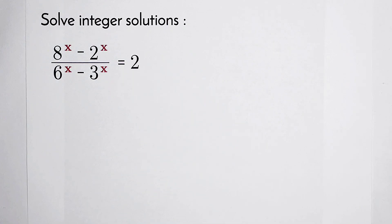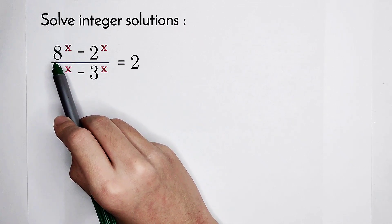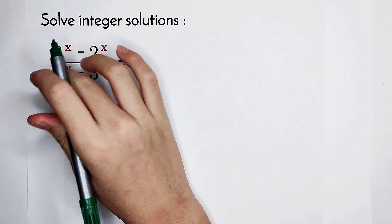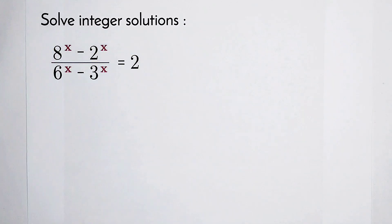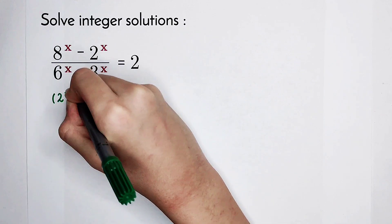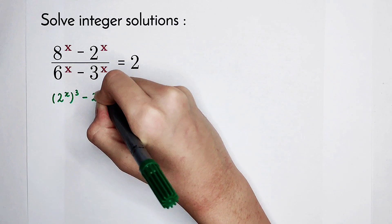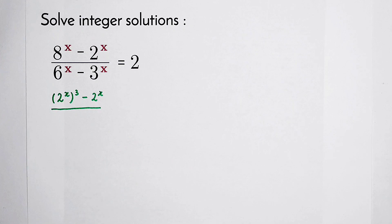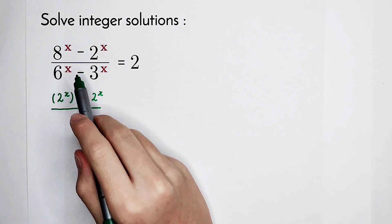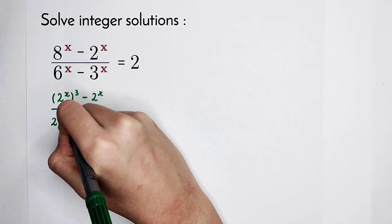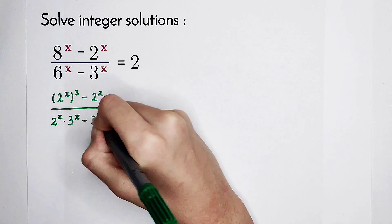As our first step, we should regard this 8 as 2 to the power of 3, and this 6 is 2 times 3. So 2 to the power of 3, all to the power of x, equals 2 to the power of x, then all to the power of 3. So the numerator becomes 2 to the power of x, all to the power of 3, minus 2 to the power of x. Now for the denominator: since 6 is 2 times 3, then 6 to the power of x equals 2 to the power of x times 3 to the power of x, then minus 3 to the power of x, all equal to 2.